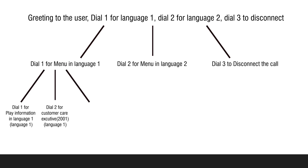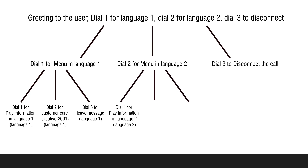If the caller dials 1, the menu will be in language 1: dial 1 for information, 2 for customer care executive, and 3 for leaving a message. If he dials 2, the menu will be in language 2: dial 1 for playing information, dial 2 for customer care, and 3 for leaving a message.